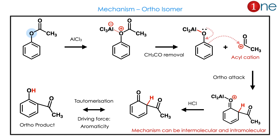Now we will see the mechanism. The Lewis acid attacks the phenolic oxygen. A temporary bond is established, then the acyl cation is removed. The acyl cation is naturally stable, so it can attack the ortho position. Once it attacks the ortho position, it takes electrons from there, oxygen donates electrons, and you have negative charge attack on the acyl — giving ortho substitution.